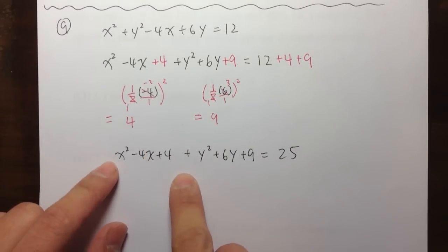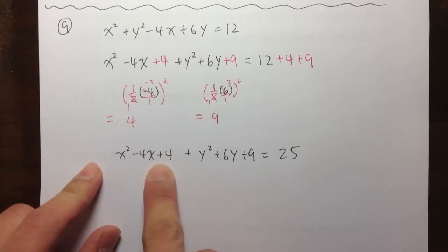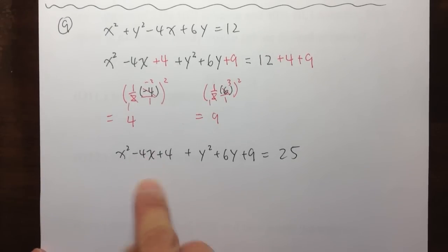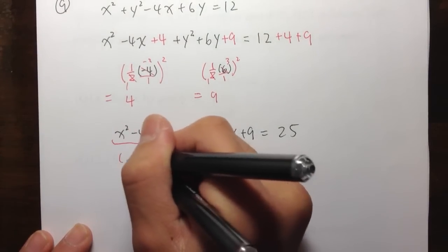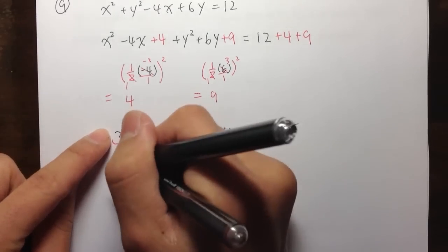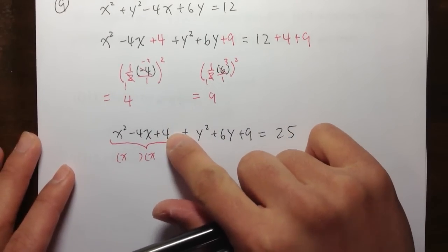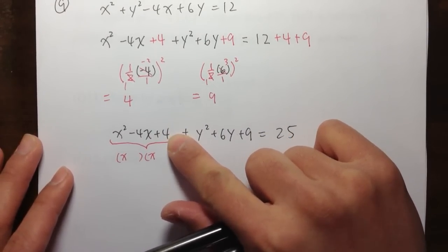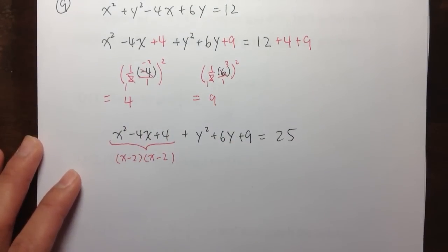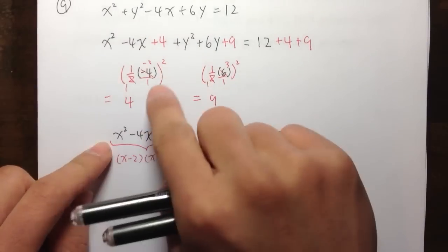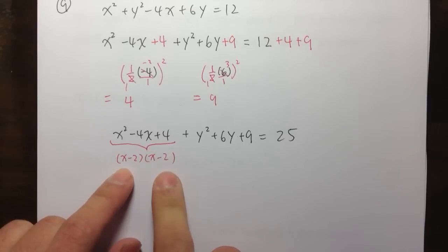If we do this correctly, this first part for x — these three terms — is going to be factorable for sure. If you factor it out, putting two parentheses, to get x squared you need x times x, and you need two numbers that multiply to positive 4 and add to negative 4. The correct combination is negative 2 and negative 2. So you get x minus 2 times x minus 2.